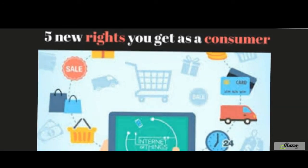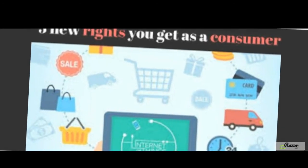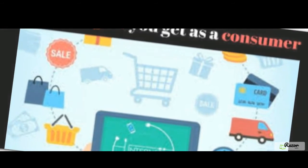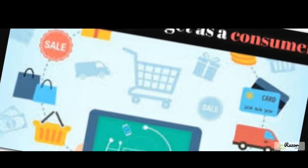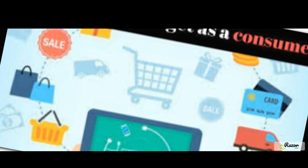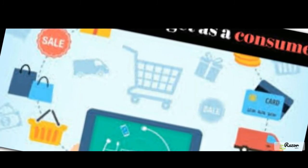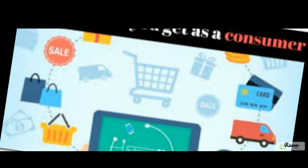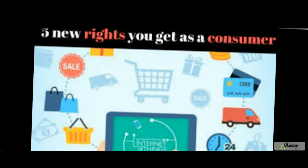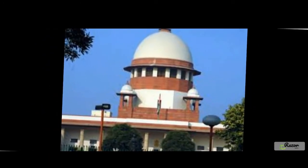The delay can be condoned if it is reasonable and can be accounted for. The law allows the complainant and the accused to file an appeal against the order of the forum at all three levels to ensure there is no injustice. The hierarchical order for filing an appeal is: district forum → state forum → national forum → Supreme Court. Under the Consumer Protection Act, protection has been extended to consumers to protect them against unscrupulous traders or sellers and to safeguard their basic rights.